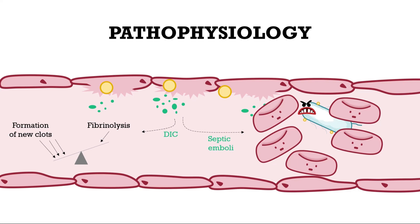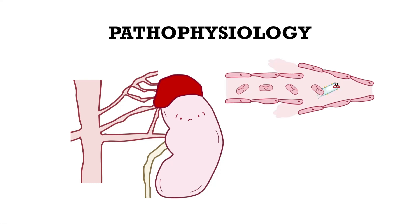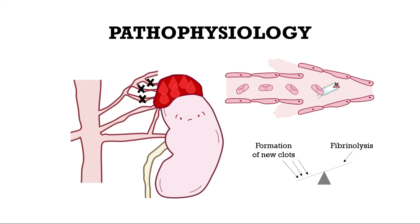A paradox arises: thrombosis on the one hand, and trouble forming new clots which leads to bleeding on the other. The septic emboli gets lodged in a small vessel in the adrenal gland. Blood pressure rises, which stretches the vessel walls and can lead to rupture. On top of that, DIC makes it hard to form clots. Blood pools in the adrenal gland, leading to increased local blood pressure, shutting off nearby blood vessels and leading to ischemia and necrosis.